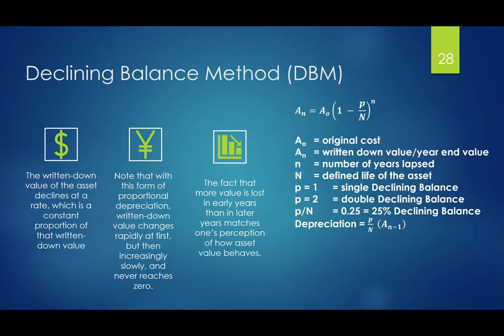The other method is called the declining balance method, which is an accelerated form of depreciation. In this method, the written-down value of the asset declines at a rate that is a constant proportion of the written-down value — not at a linear rate. With this proportional depreciation, the written-down value changes rapidly at first, then increasingly slows down, but never reaches zero. The fact that more value is lost in early years than in later years matches the perception of how an asset's value behaves.